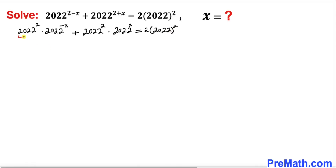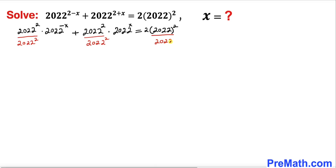Now we can see that 2022 squared appears in both terms on the left hand side and also on the right hand side — they are in common. So I am going to divide across the board by 2022 whole square. After cancellation, our equation becomes 2022 whole power negative x plus 2022 whole power x equals 2 on the right hand side.